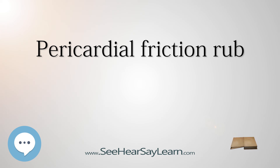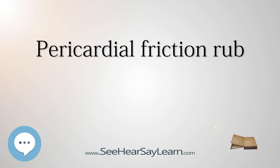Also, a pleural rub can only be heard during inspiration and expiration, whereas the pericardial rub can be heard even after cessation of breathing. Pleural rub creates pain mostly on the lateral part of the chest wall, whereas pain due to pericardial rub is always central in location. The intensity of pleural rub is increased on pressing the diaphragm of the stethoscope over the affected area, whereas there is no such change in case of a pericardial rub.